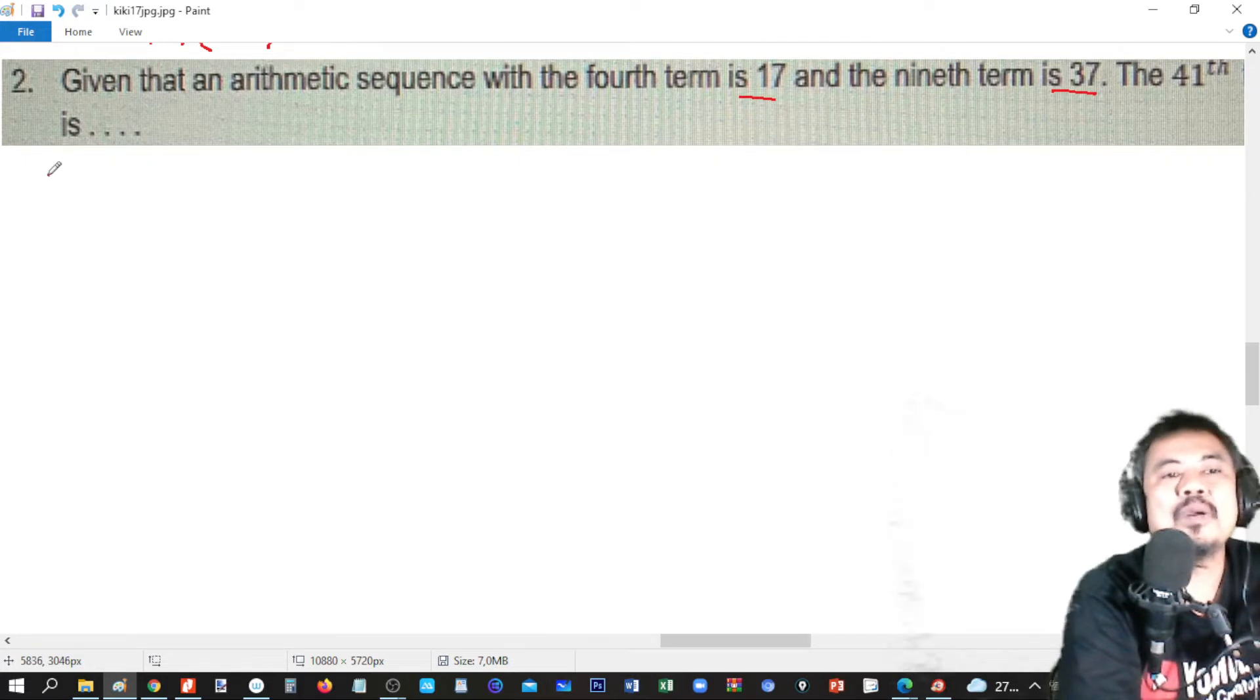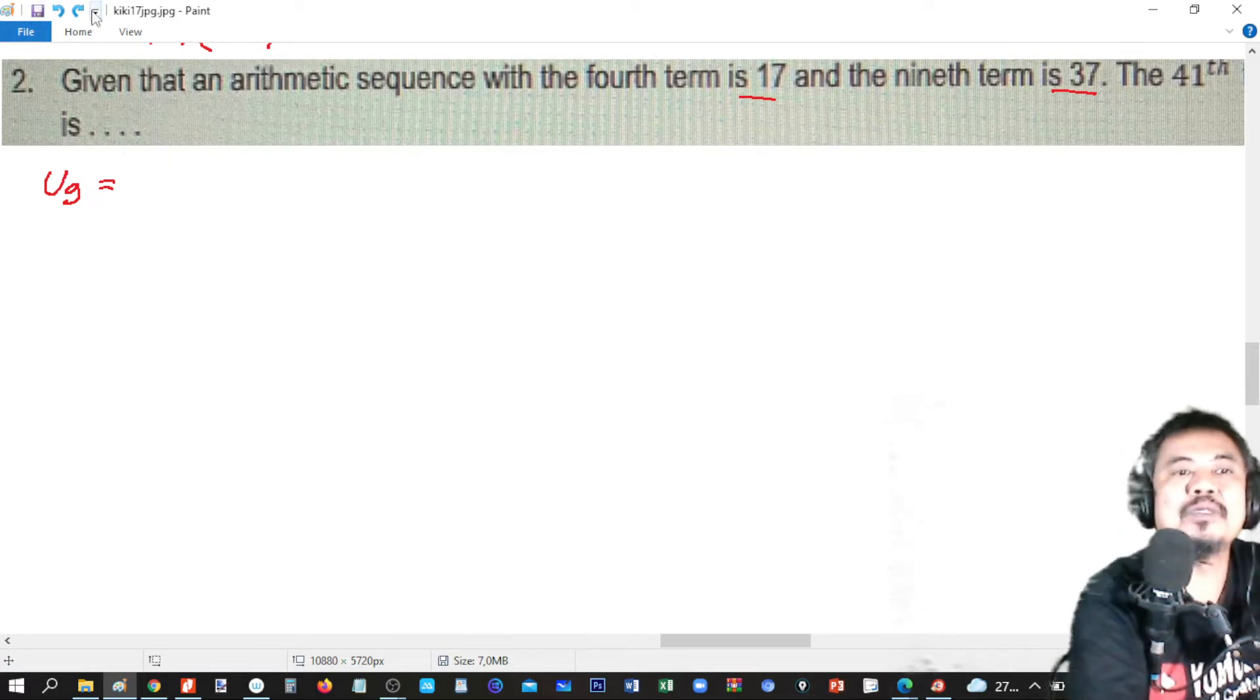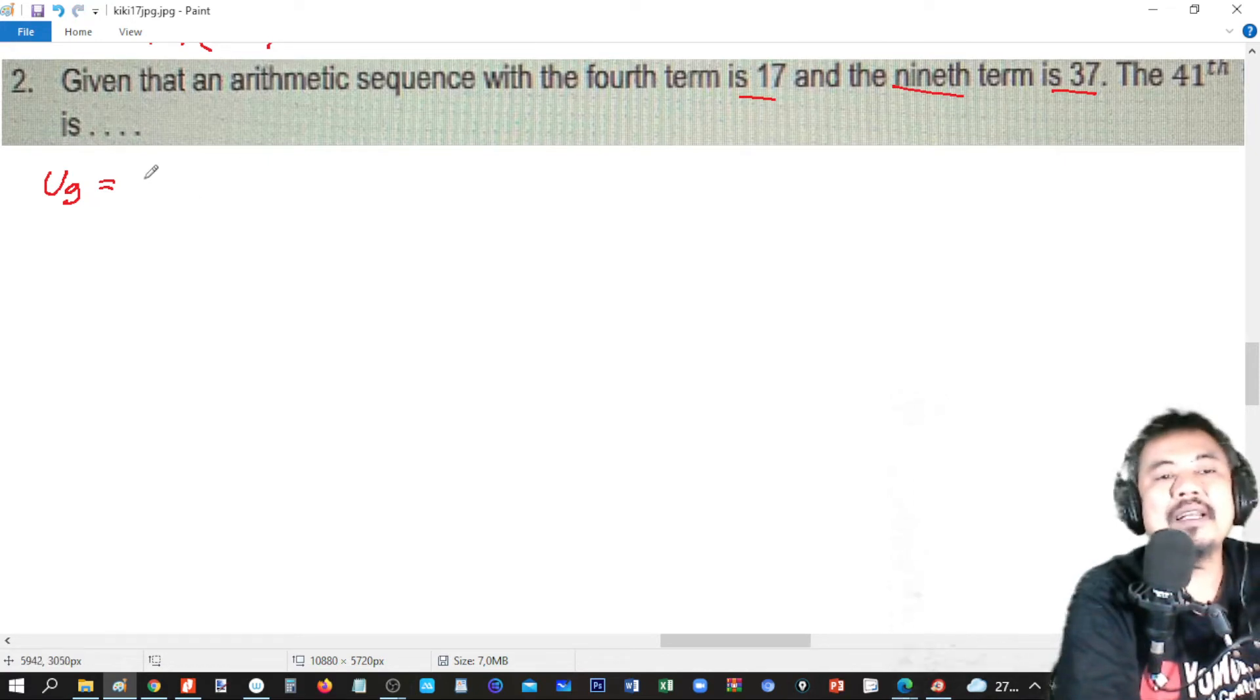So U9 is 37. Which is, let me write this here. U9, this is... wait, U9, yes. U9 is a plus, for the ninth term, 8b. This equals 37.